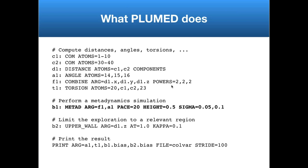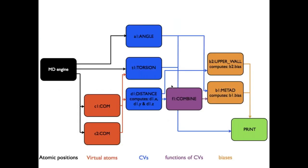If we take that input file and turn it into a graph, we can see how data is passed through the code. We start with the MD engine passing atomic positions into Plumed. Those positions are passed into two COM commands that calculate two center of mass positions, C1 and C2. Those are then passed to collective variables — angle, torsion, and distance — which can also take atomic positions directly from the MD code. We can do functions of collective variables, simulation biases, and eventually all that data is passed to a print command that outputs whatever the user wants to a file.